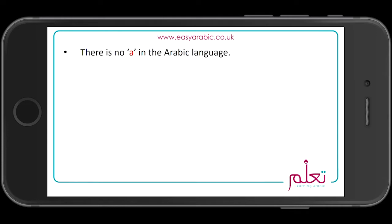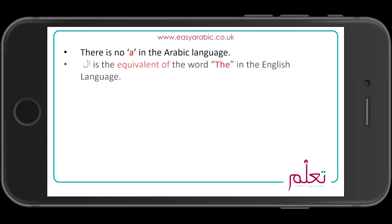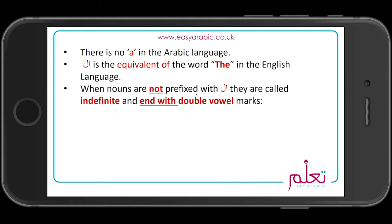There is no 'a' in the Arabic language. 'Al' is the equivalent of the word 'the'. When nouns are not prefixed with 'Al', they are called indefinite and end with double vowels — what's known as tanwin. When we say indefinite, it means you're saying something like 'a book' or 'a pen' and so forth.